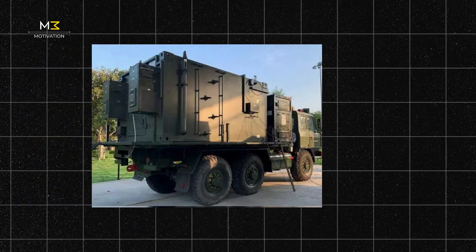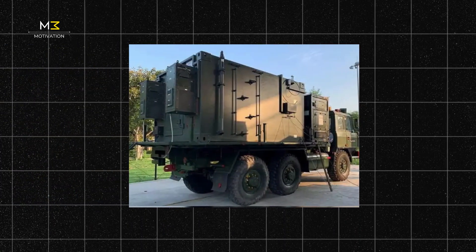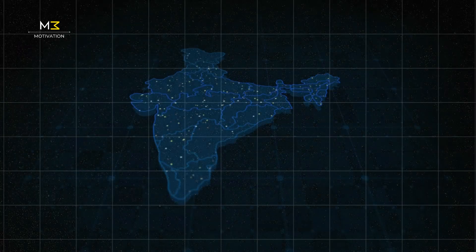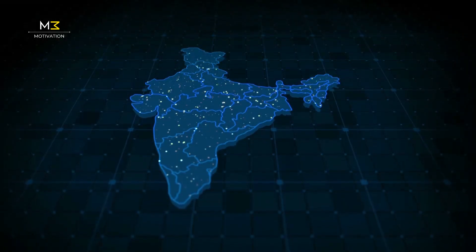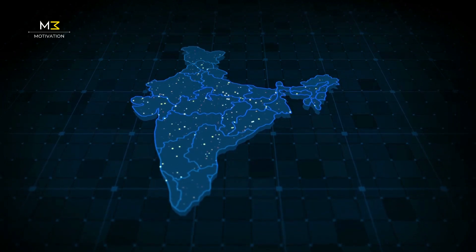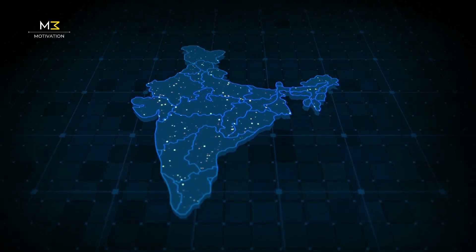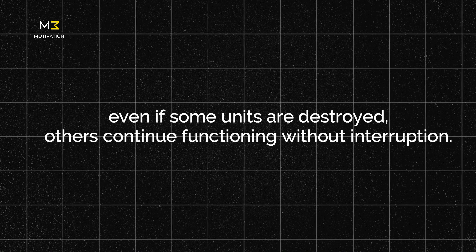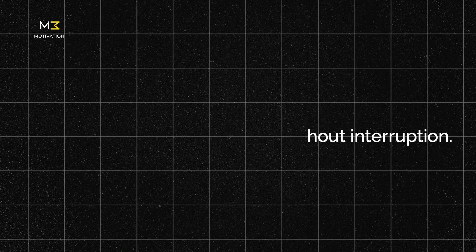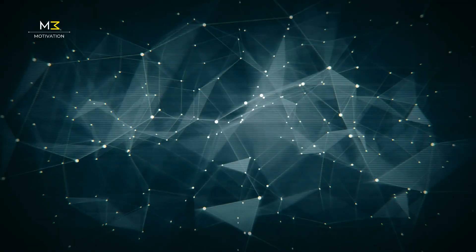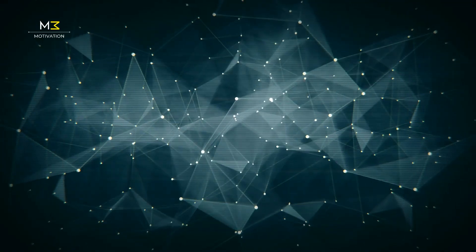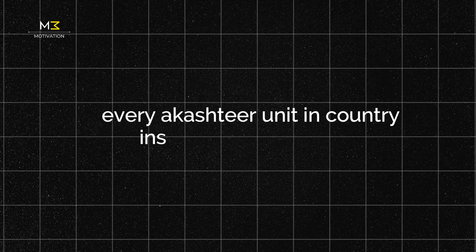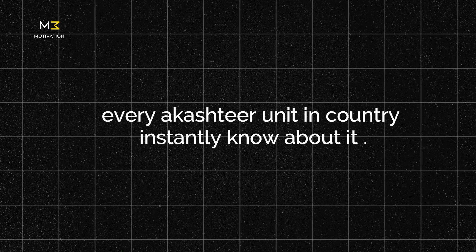Akash TIR control units are mounted on high-mobility trucks, making them difficult to target. The system operates through multiple decentralized command and control units across the country, ensuring that if one unit is destroyed, others continue functioning without interruption. All units are interconnected — for example, if a drone is detected over Rajasthan, nodes in Jammu or Gujarat are instantly aware.